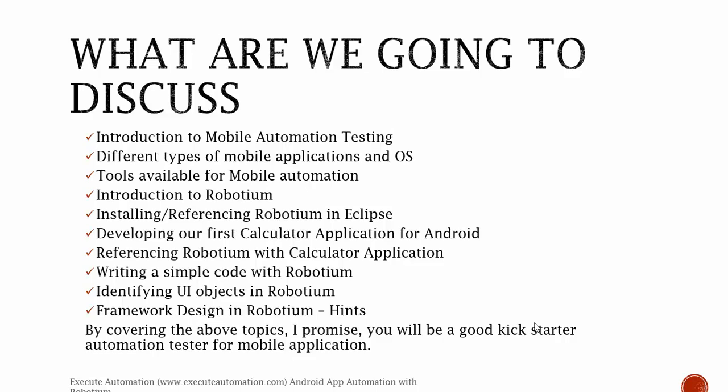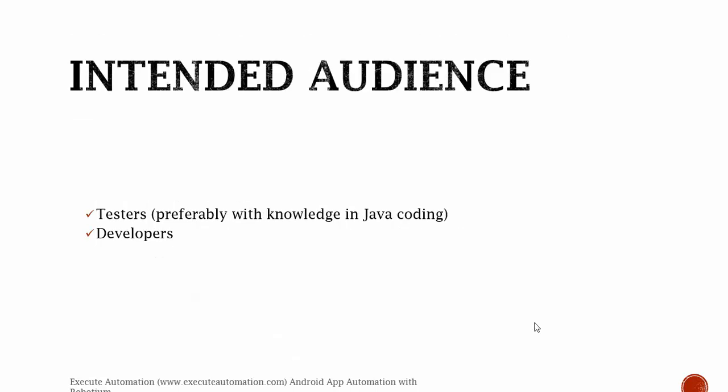Then we are going to start talking about referencing Robotium with the calculator application, writing simple code with Robotium, identifying UI objects in Robotium, and framework design. This is just an overview — we may cover even more topics in upcoming videos. By covering the above topics, I promise you will be a good kickstarter automation tester for mobile applications.